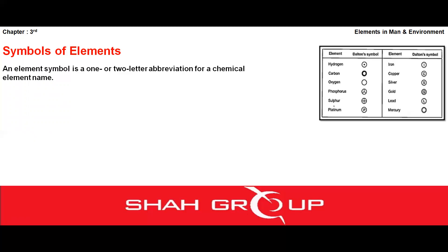Jaise ki aap is table mein dekh sakte hain, yeh table aapko dikha raha hai ki kuch elements hain aur unke symbols bhi jo hain woh aapko nazar aa rahi hain. Yahaan par hamare paas elements hain — hydrogen, carbon, oxygen, phosphorus, sulfur, platinum, iron, copper, silver, gold, lead, and mercury. Yeh kuch hamare paas elements hain jisme metals aur non-metals bhi mix hain.